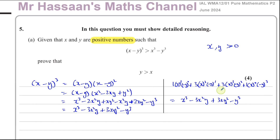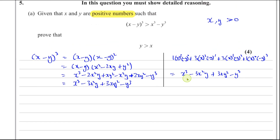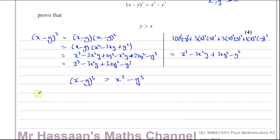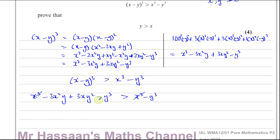So we expand the bracket first, then continue with the inequality. We have x minus y cubed greater than x cubed minus y cubed, which becomes x cubed minus 3x squared y plus 3xy squared minus y cubed is greater than x cubed minus y cubed. Bringing everything to one side: x cubed minus x cubed cancels, and minus y cubed plus y cubed cancels, leaving minus 3x squared y plus 3xy squared is greater than 0.